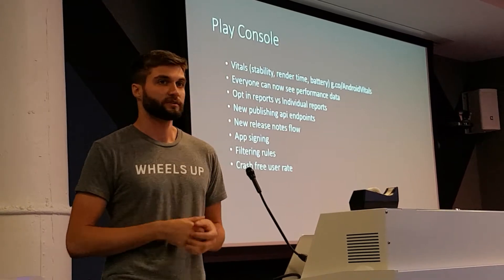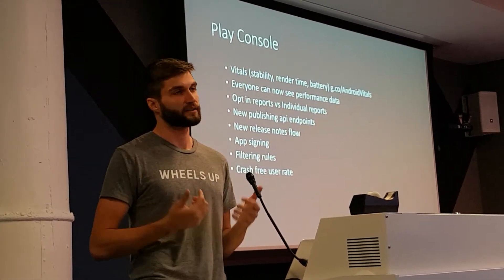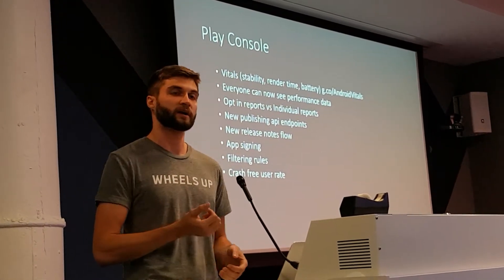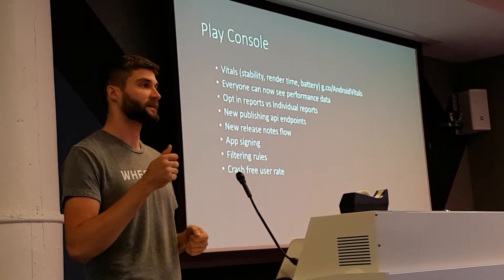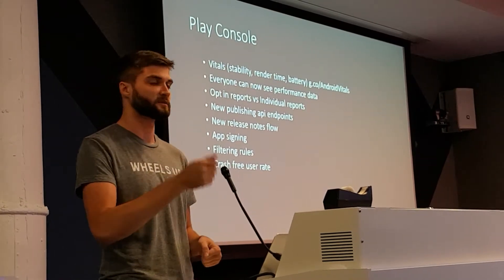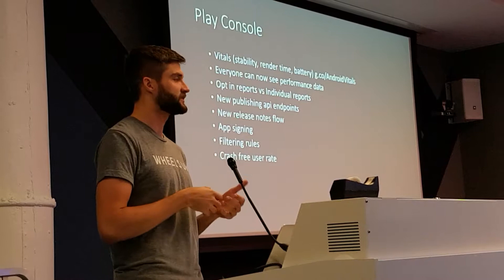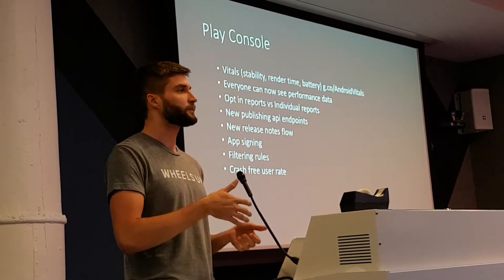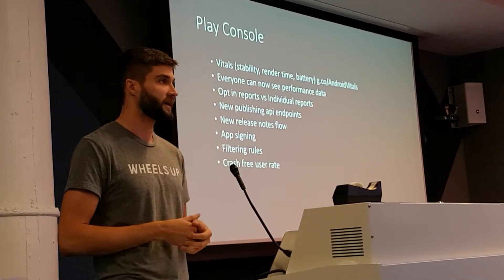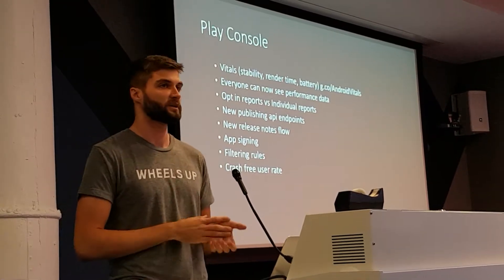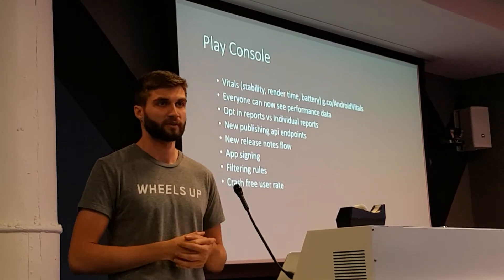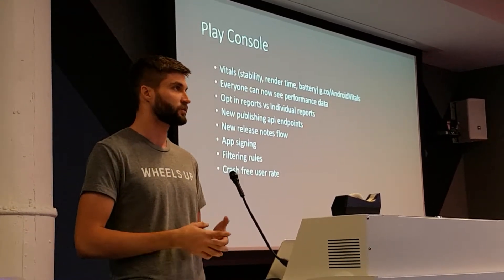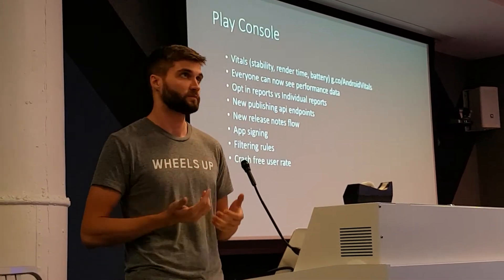Opt-in reports versus individual reports: I think this is one of the biggest pain points. The Play Console only gave you crash reports from people that had to knowingly hit yes to send a specific crash report. Now, when you set up a device and opt into Google analytics and crash reporting for better system behavior, all of their crash reports and ANRs automatically go to your app dashboard. Early signs are showing about a 100x increase in reports getting to developers. If you're not using an external tool like Crashlytics or Bugsnag, that should be really awesome for you.